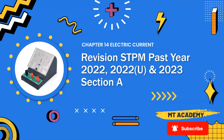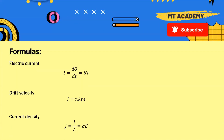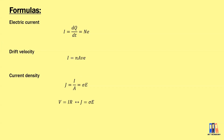Today we shall discuss the paper for Chapter 14: Electric Current. Let's review the formulas first. The first is electric current: I = dq/dt = Ne, where n here is the rate of electron flow, or the number of electrons flowing in one second.